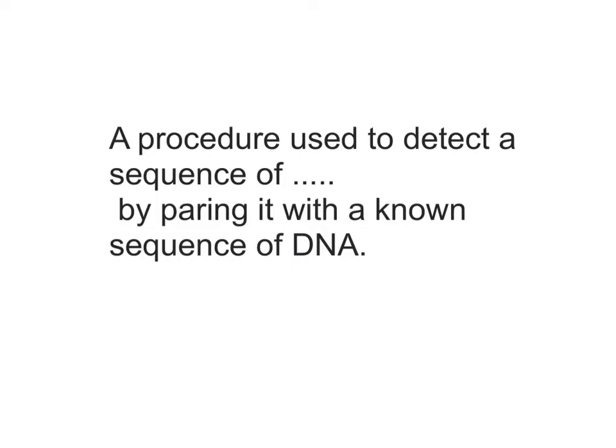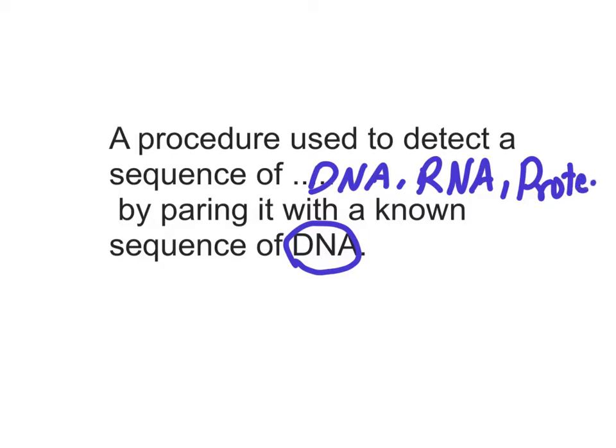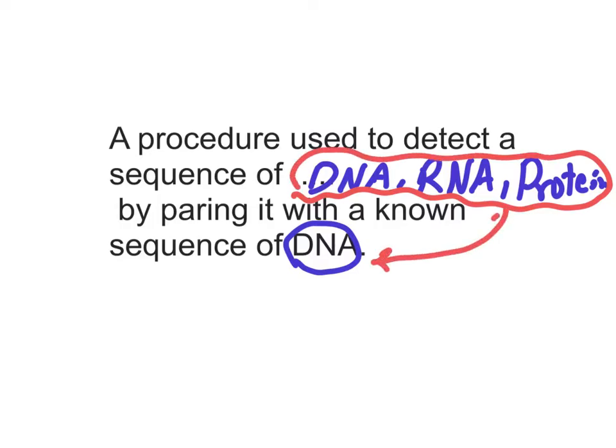Blotting is a procedure used to detect a sequence of whatever by pairing it with a known sequence of DNA. So I have something that is known, which is the DNA. I'll pair it with something unknown, could be like DNA, could be RNA, could be protein, whatever. And these are unknown in sequence, but I will pair them with known DNA, and then I will know exactly the sequence of this unknown. That's blotting.